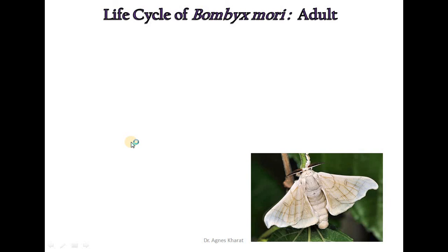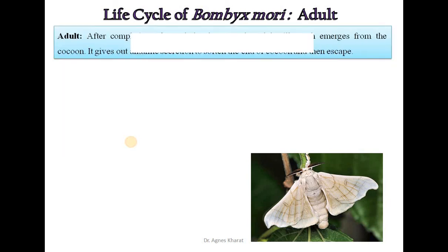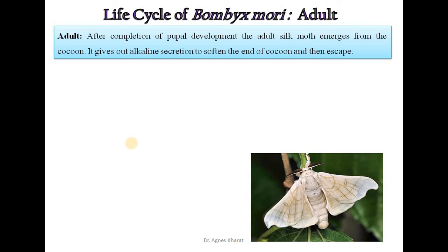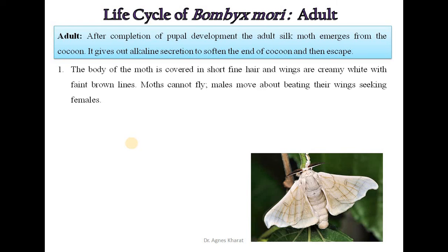The next stage of the life cycle of Bombyx mori is the adult. After completion of pupal development, the adult silk moth emerges from the cocoon. It gives out an alkaline secretion to soften the end of the cocoon and then escapes. The body of the moth is covered in short fine hair and the wings are creamy white with fanned brown lines.